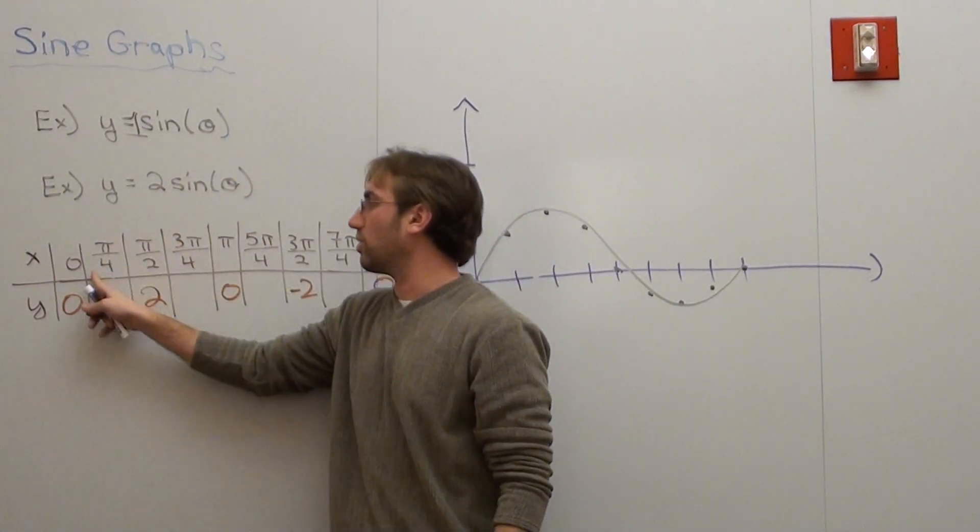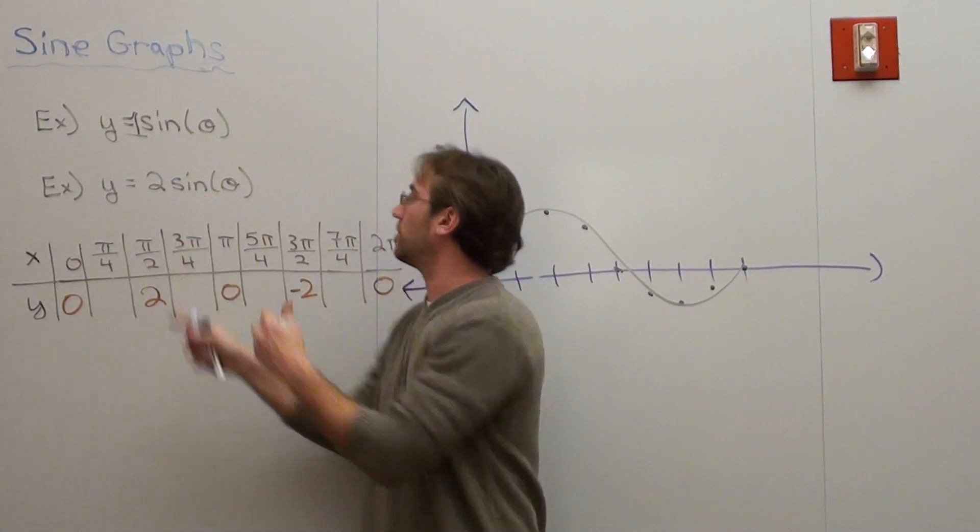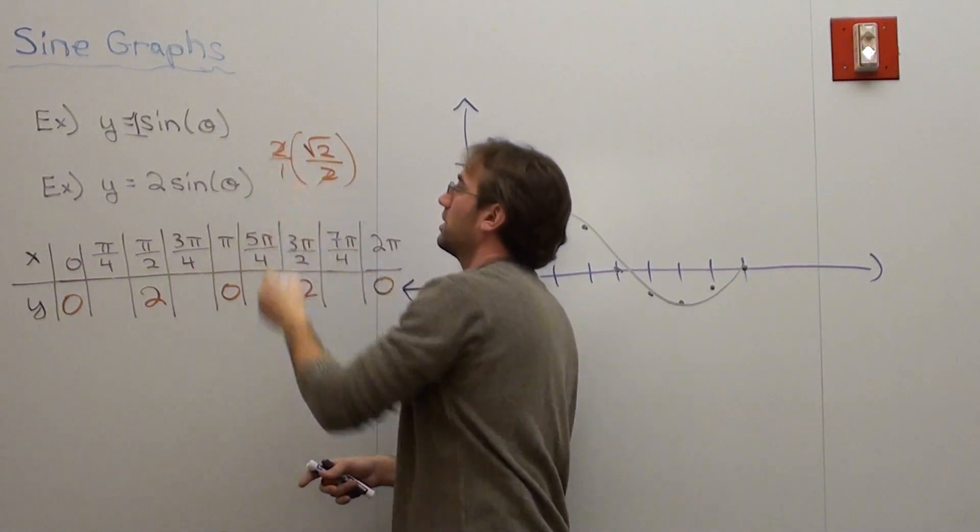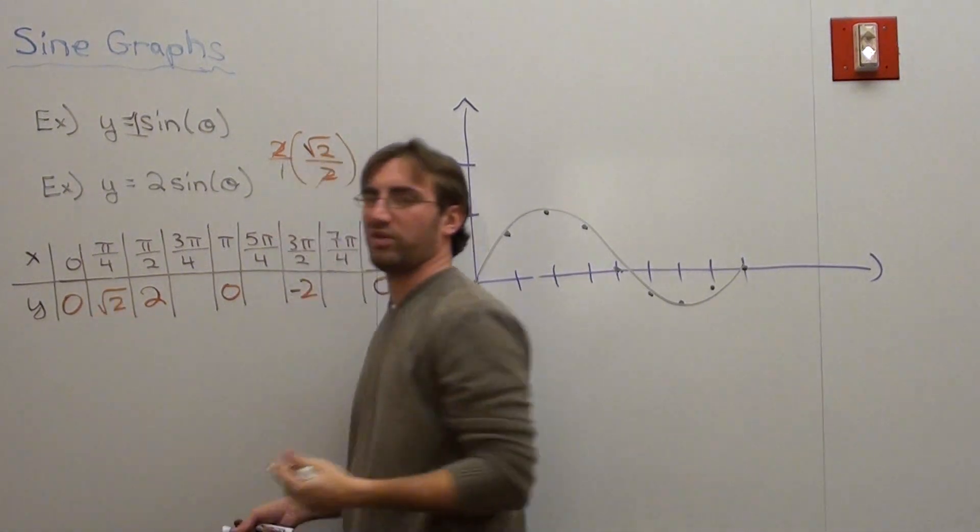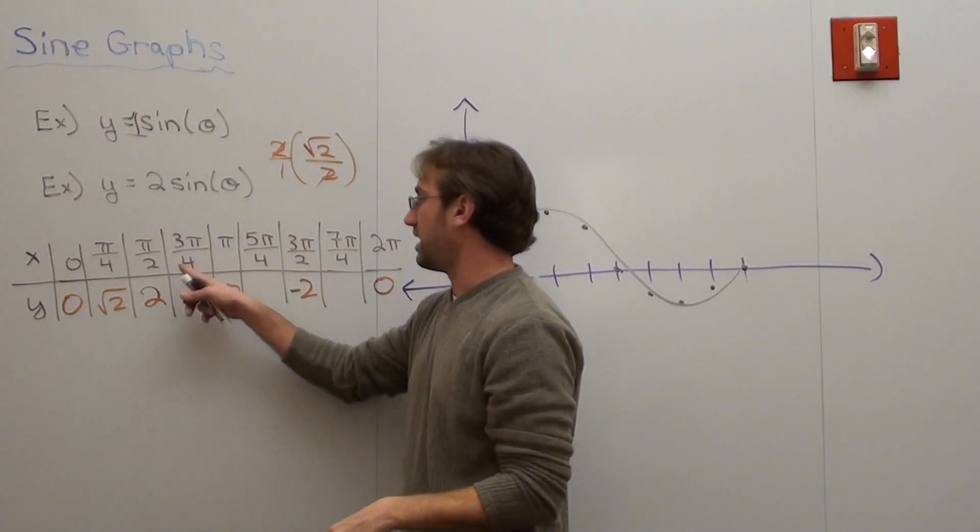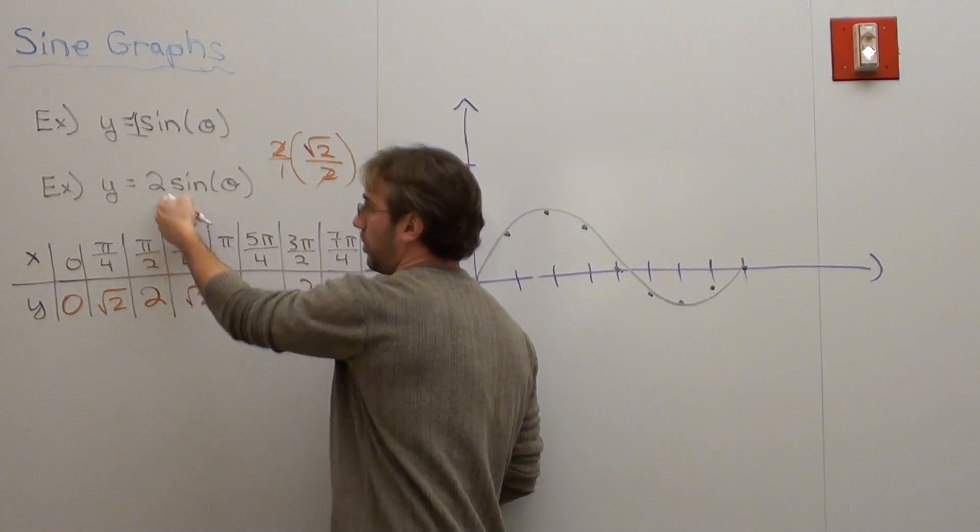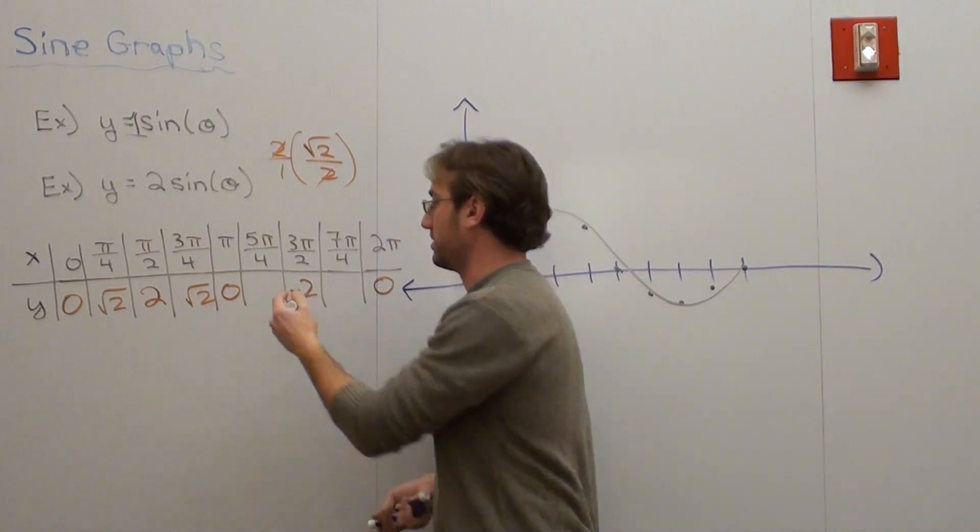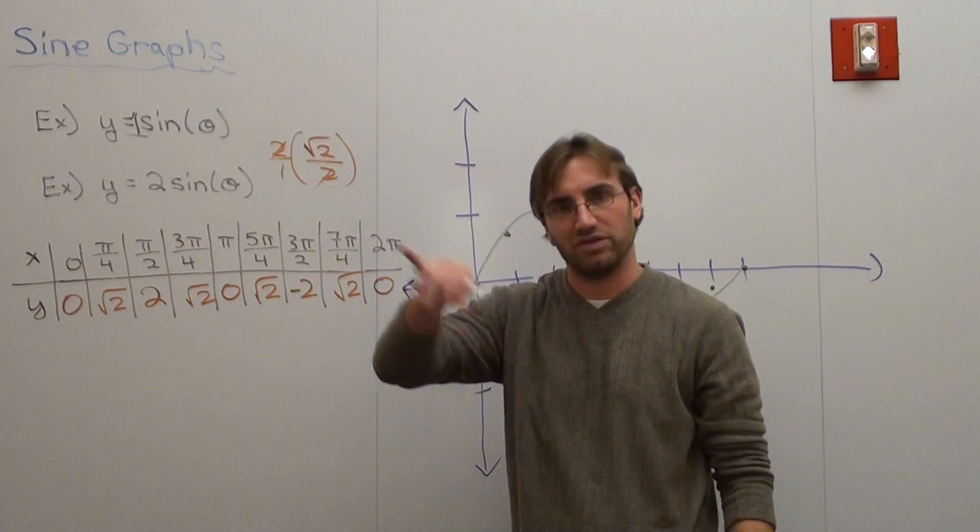Sine of pi over 4 or sine of 45 degrees is root 2 over 2. Well, root 2 actually comes out to like 1.414. Sine of 3 pi over 4, root 2 over 2. When I multiply with 2, it's just root 2. It's the same thing. No thought process needed there. Perfect. Good job.